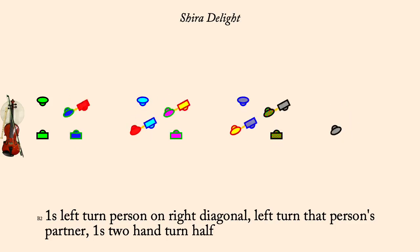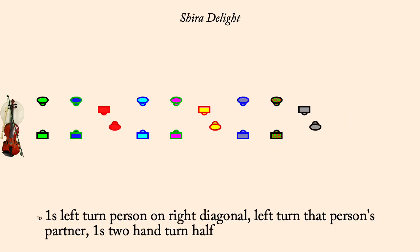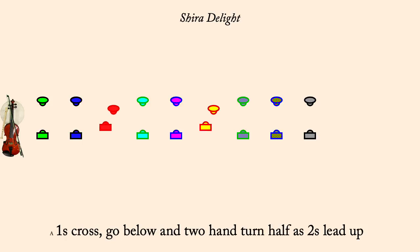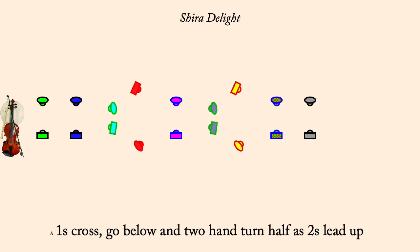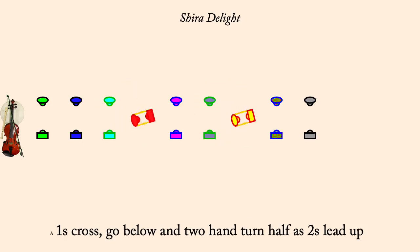Ones cross, go below, and two-hand turn half as twos lead up. Ones cross, go below, and two-hand turn half as threes lead up.